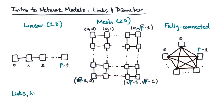That brings us to our first important property, which is the number of connections, or links. So given P nodes, a linear network evidently has P-1 links. A 2D mesh network has this many links, which is about 2 times P. A fully connected network has about P squared over 2 links.